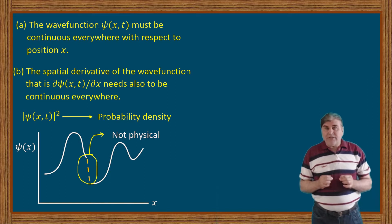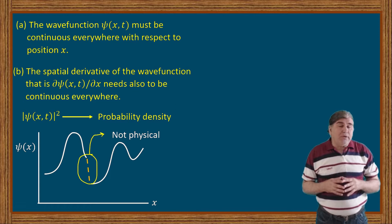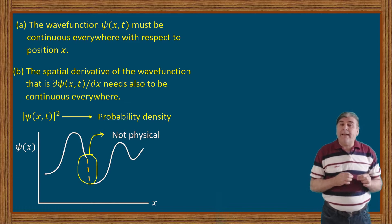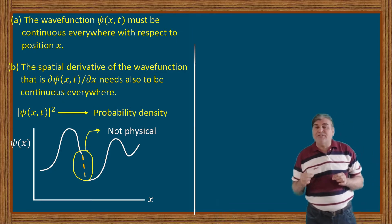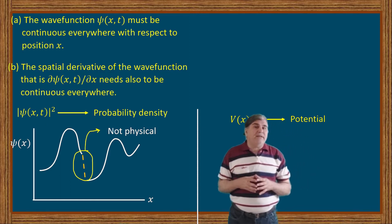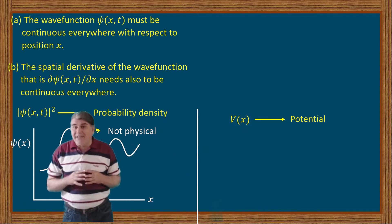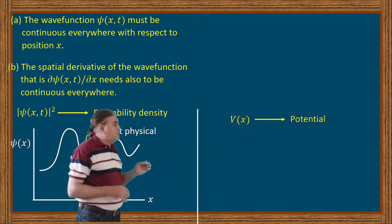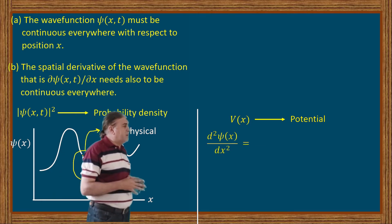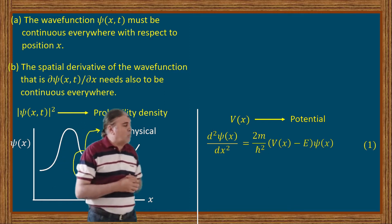Now let's turn our attention towards the second condition. The second condition can be proven mathematically and depending upon the nature of the potential, it may or may not stand true. To further elaborate on this conclusion, let us start by arranging the one-dimensional time-independent Schrödinger wave equation in the form: d²ψ/dx² equals (2m/ħ²) times the difference of potential and total energy times the wave function.